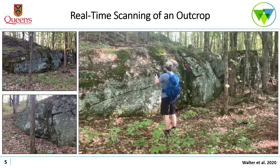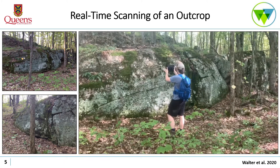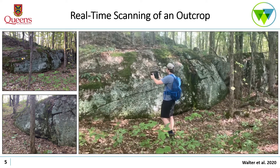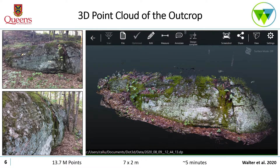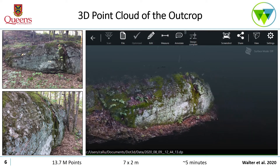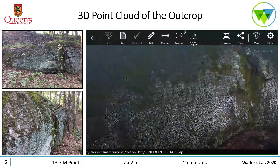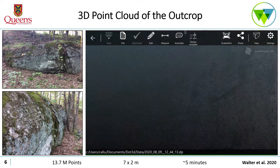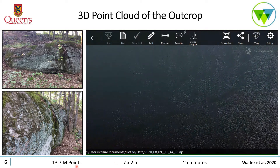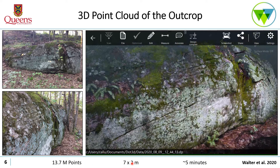This video demonstrates how the scanning procedure is performed at an outcrop in the field. It is done by the field geologist physically moving the scanner throughout the scene in order to create a 3D digital outcrop model. When the scan is completed, the field geologist can instantly look at the 3D point cloud in real time. In this scan, there are roughly 13.7 million points, with the outcrop being approximately seven meters long by two meters high, and the scan taking about five minutes in total.